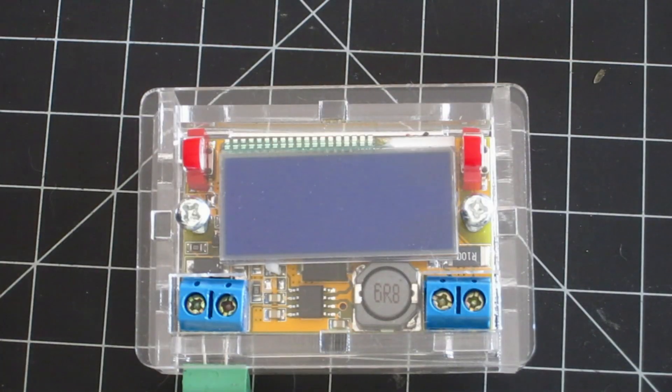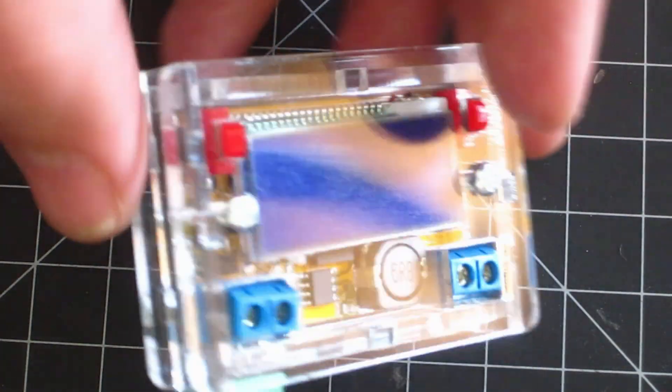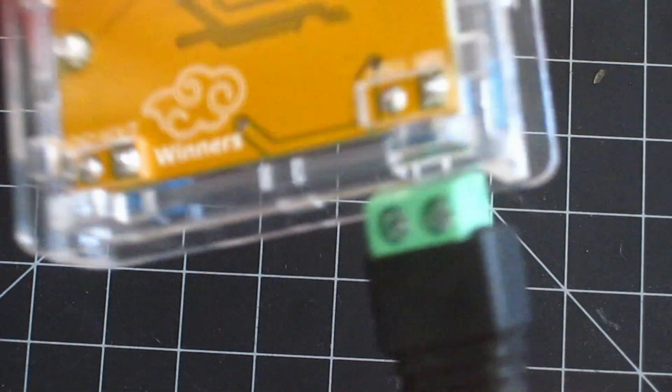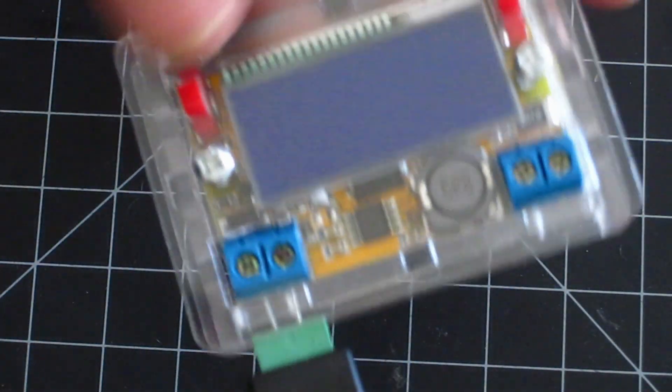It has screw terminal blocks for supply and regulated output, which is a little annoying but flexible. I used two leads from an LED to affix a barrel jack adapter to the input.